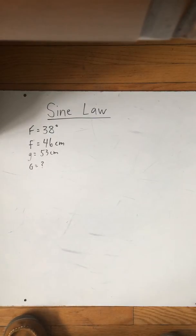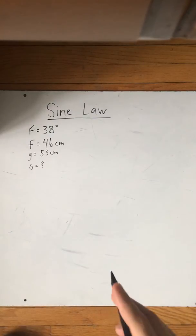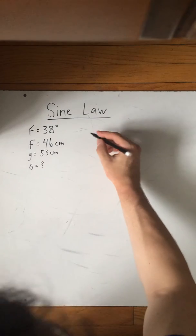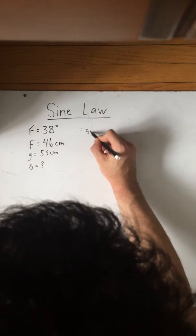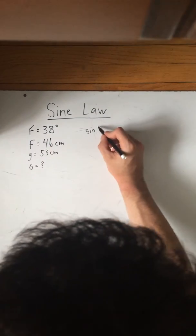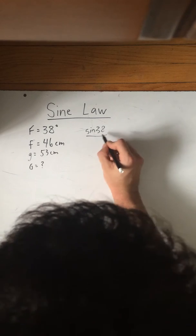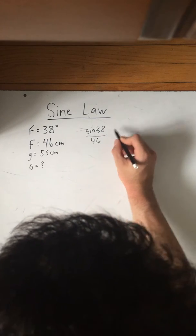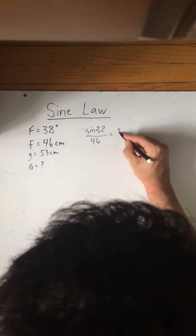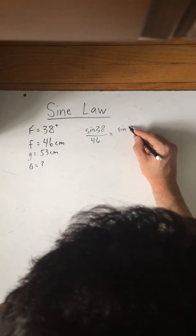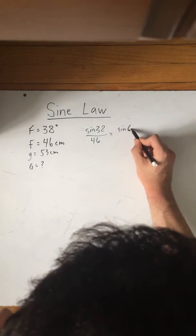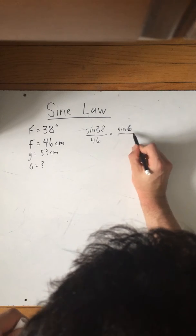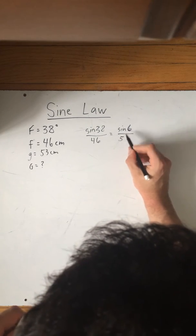So we start off by writing out our sine formula. As we know, it can either be the sine of F over side F, equals sine of angle G over side G, which is 53.